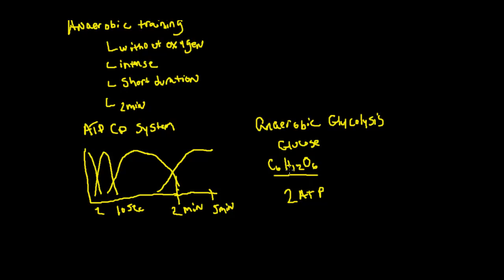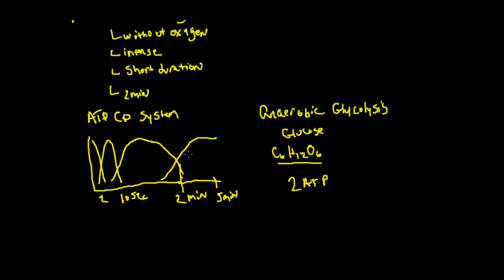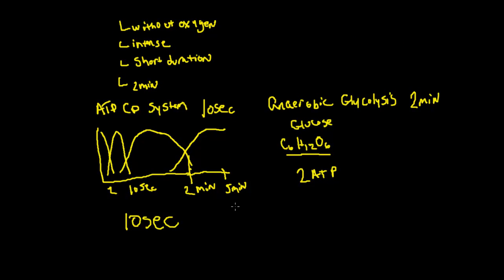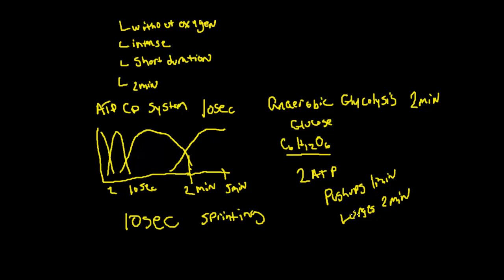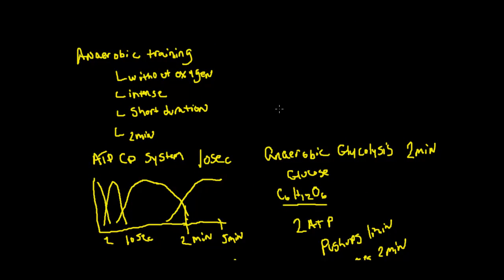The ATP-CP system lasts about 10 seconds — some books say 10 to 12 seconds depending on the literature. Anaerobic glycolysis will not last more than two minutes. Examples of these activities would be sprinting for the ATP-CP system, and push-ups for one minute or lunges for two minutes for anaerobic glycolysis — you'll definitely fatigue around the two-minute mark.